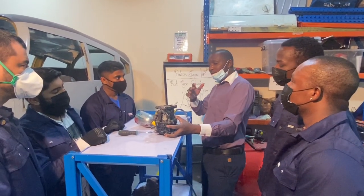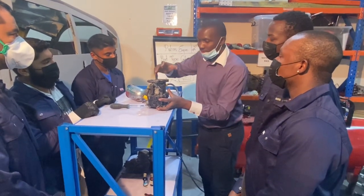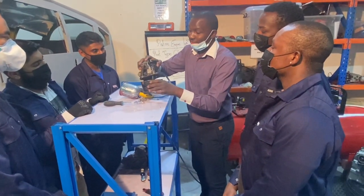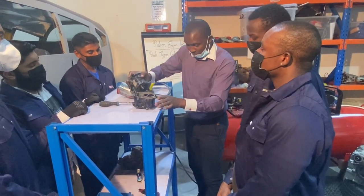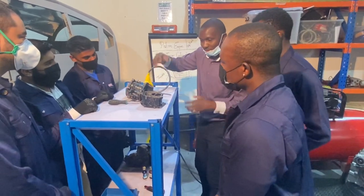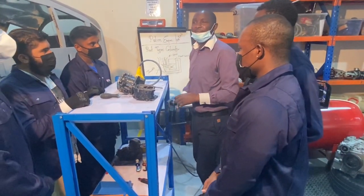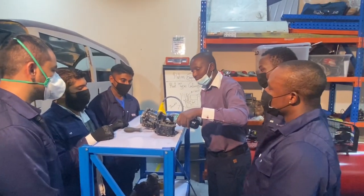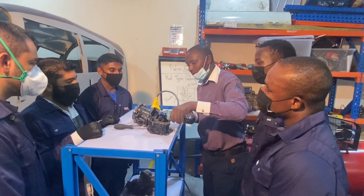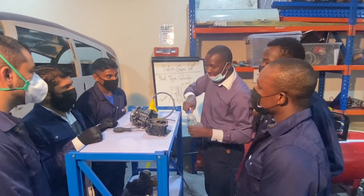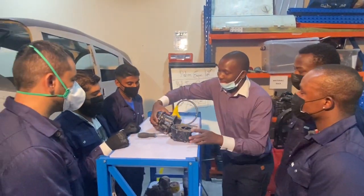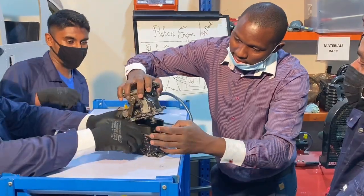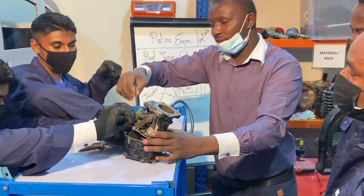We're going to do a small demonstration of how a float-type carburetor works. We will use water, but for the sake of visibility, we are going to dye the water so that you can see it. We will simulate an engine operation through a pressure carburetor. We will add the water to the system — the water has been dyed just for the sake of visibility — and then we put it back.